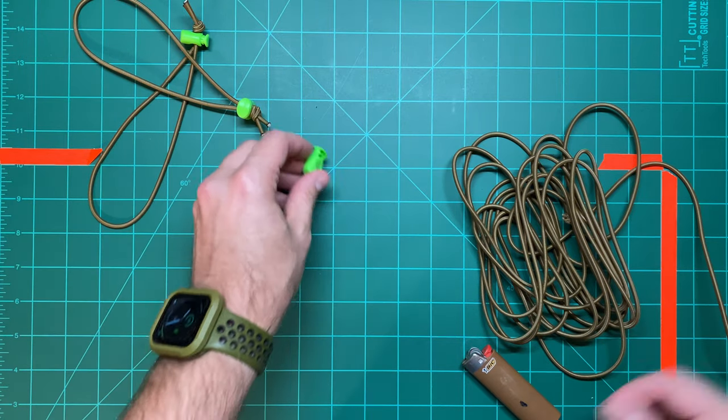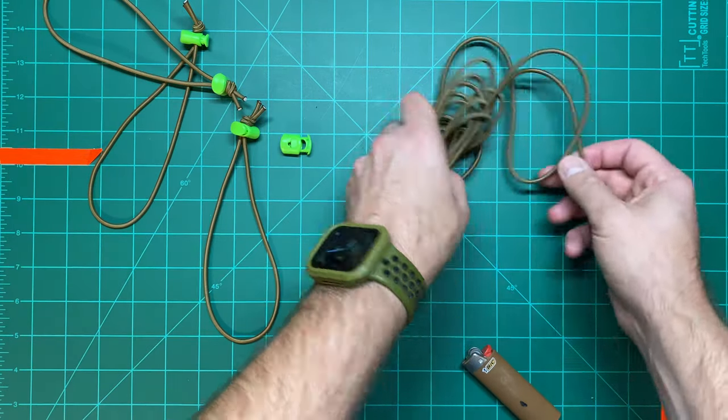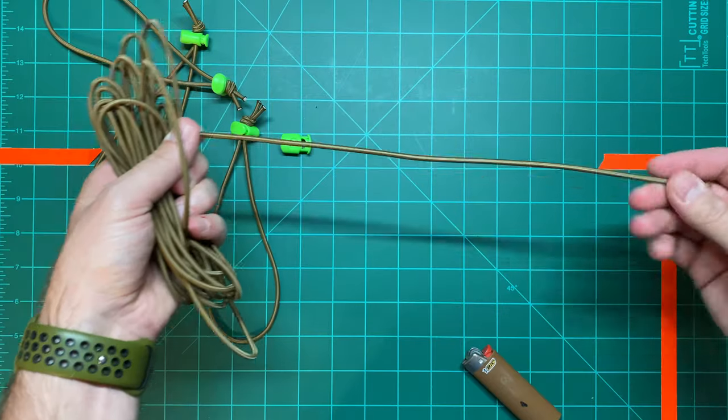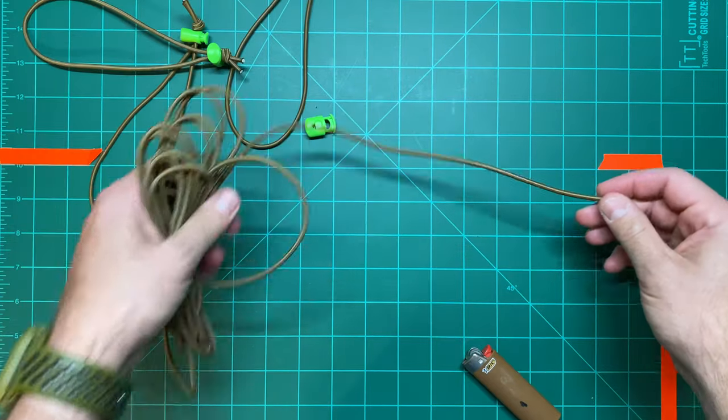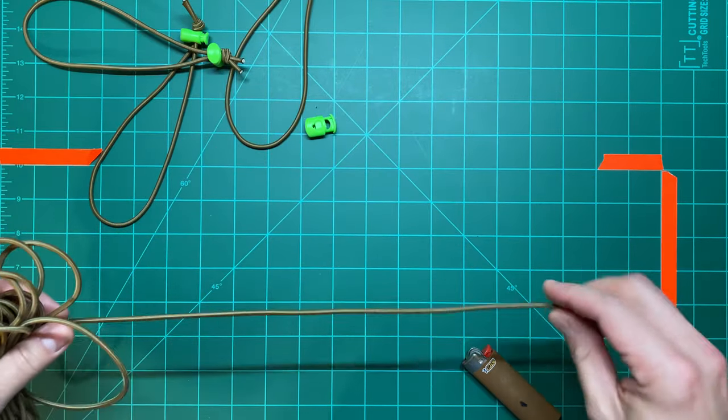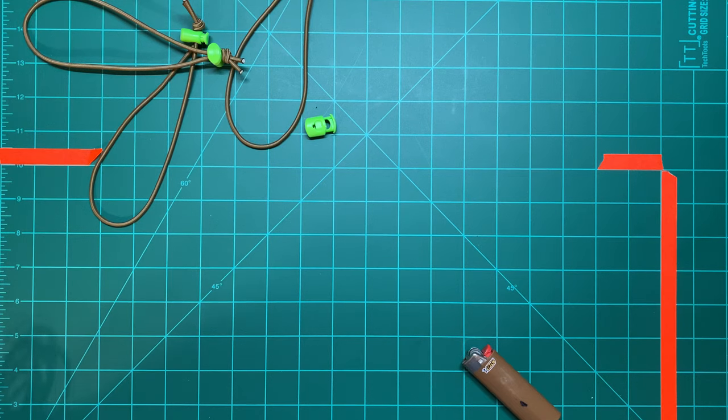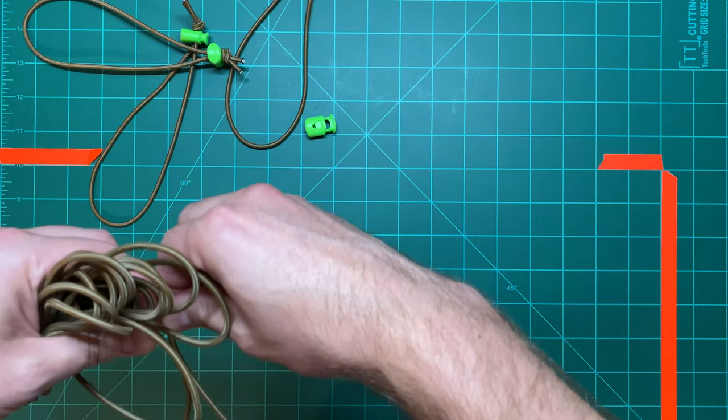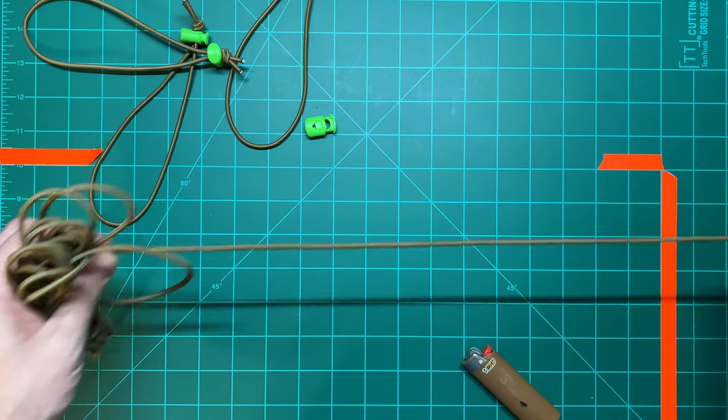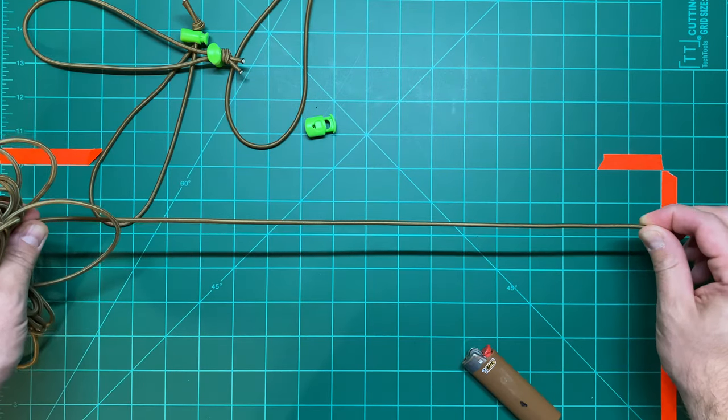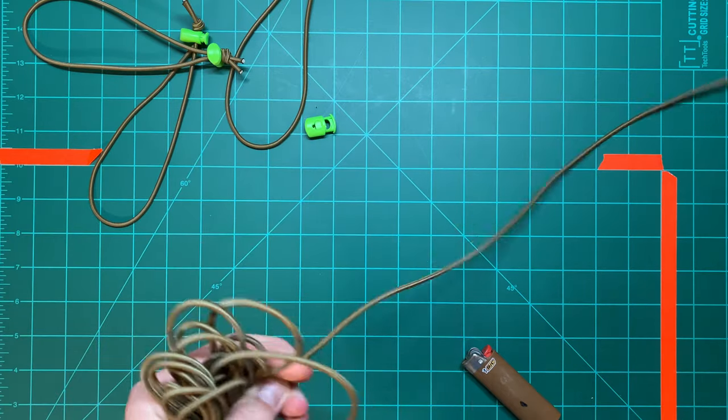So real quick, we'll make one. You can get shock cord, also very cheap. Just order it from Amazon. So typically I run, let me measure this out. I want to say, I think about 15, 16 inches. So we'll go ahead and cut off that amount.